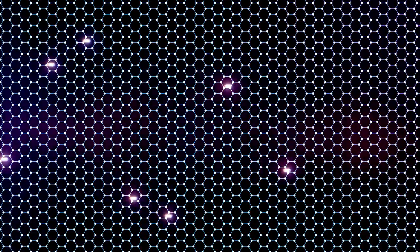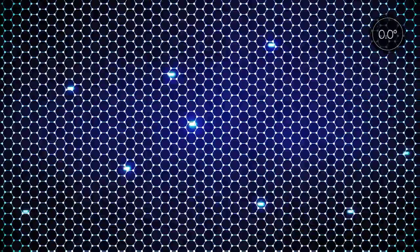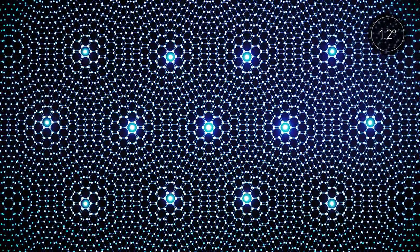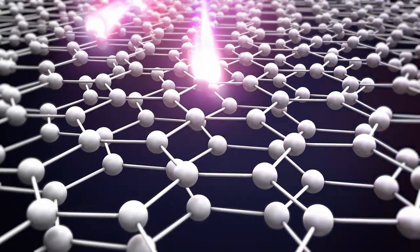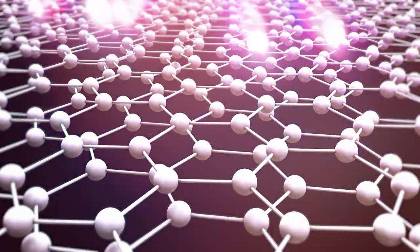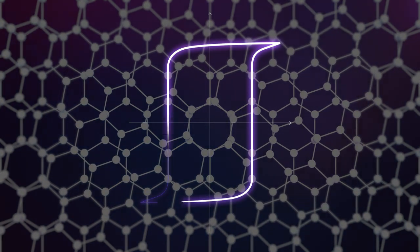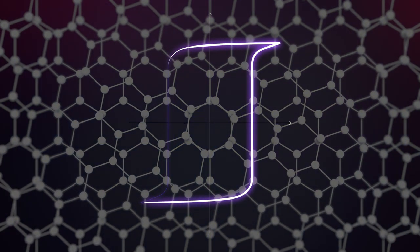For example, by adding electrons to bilayer graphene, cooling it down to extremely low temperatures and twisting it to the magic angle of only 1.1 degrees, it can become insulating, superconducting or even ferromagnetic despite being made of nothing but carbon.